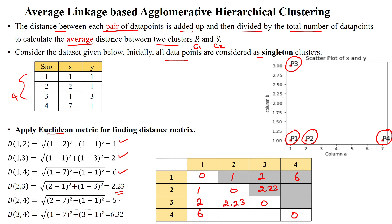The distance 3,4 and 4,3 is 6.32. The same values are reflected again in the upper portion of the distance matrix. We can take either the upper or lower triangle of the distance matrix, so we will omit the upper portion and consider only the lower portion. From this, we have to select the minimum value in the distance matrix.